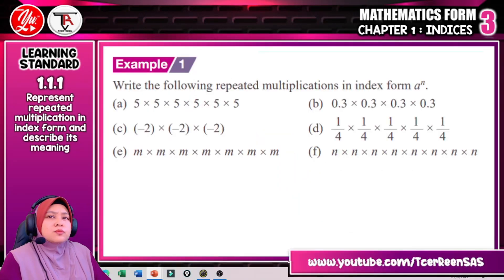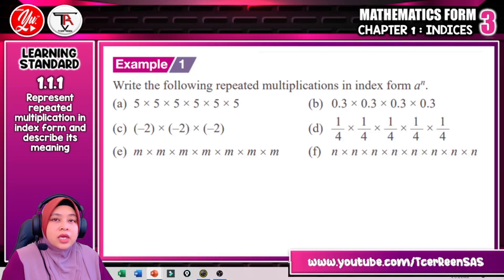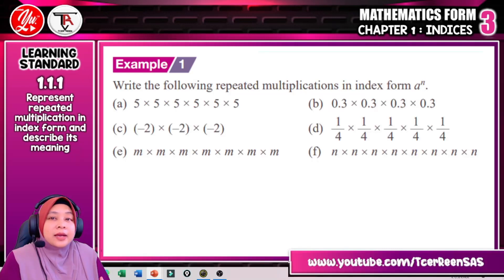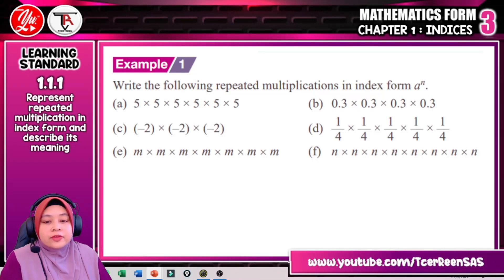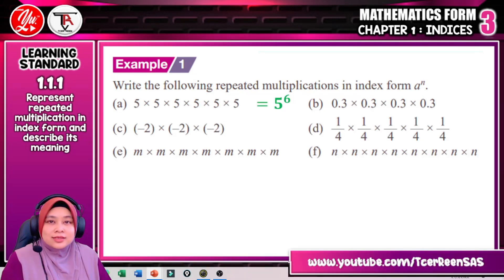Let us move on to Example 1: Write the following repeated multiplication in index form using A to the power of N. Please remember that A is the base and N is the index. Index means how many times it is repeated. For part A: 5 times 5 times 5 times 5 times 5 times 5 times 5 — there are 6 fives, so wait, that is actually 7 fives — but the answer given is 5 to the power of 6.